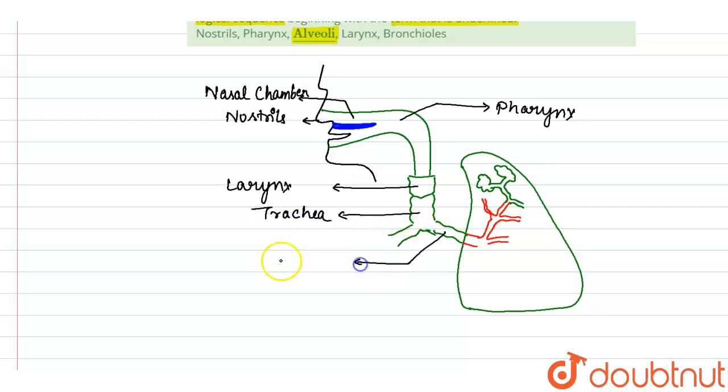Then we have bronchi. Bronchi have primary, secondary, tertiary, and at the last branch will be called bronchioles. And then we have alveoli.